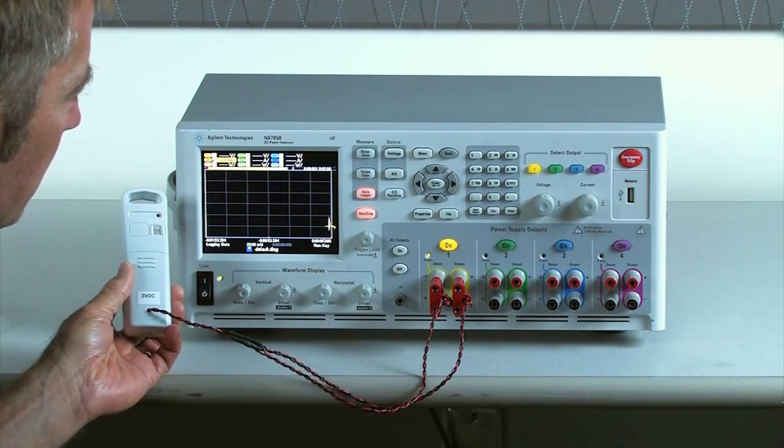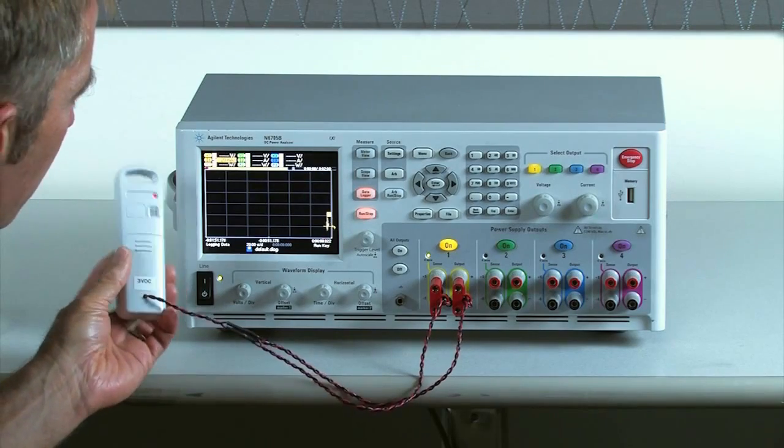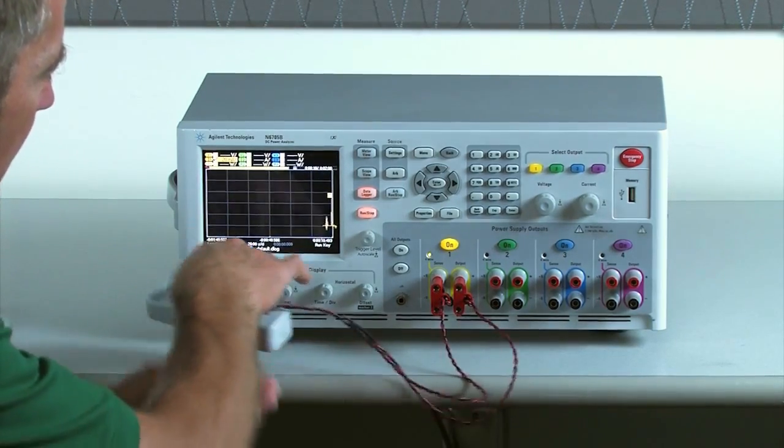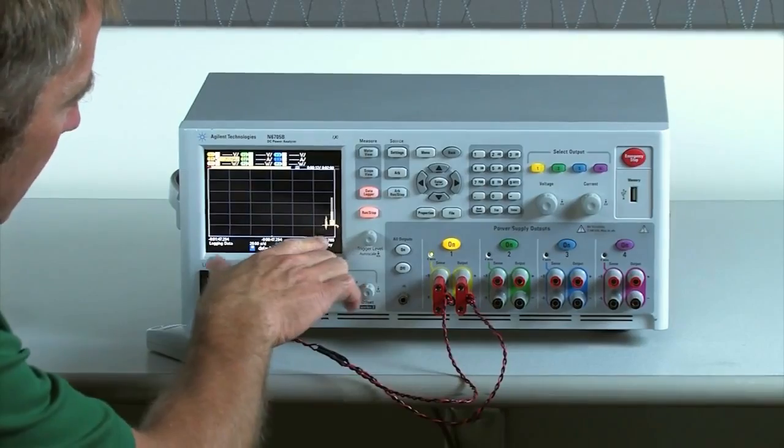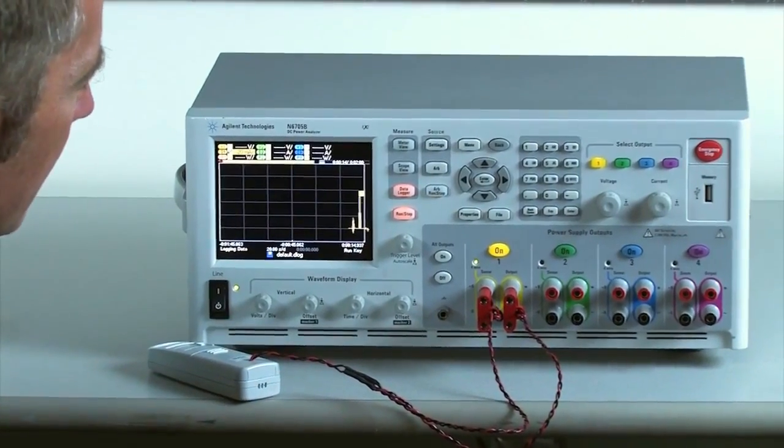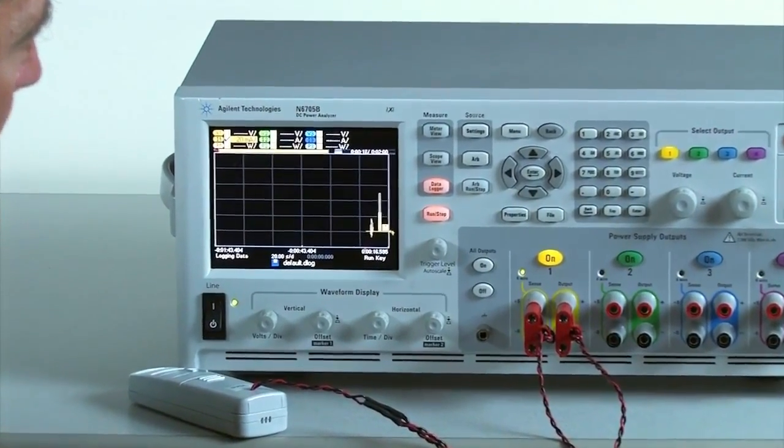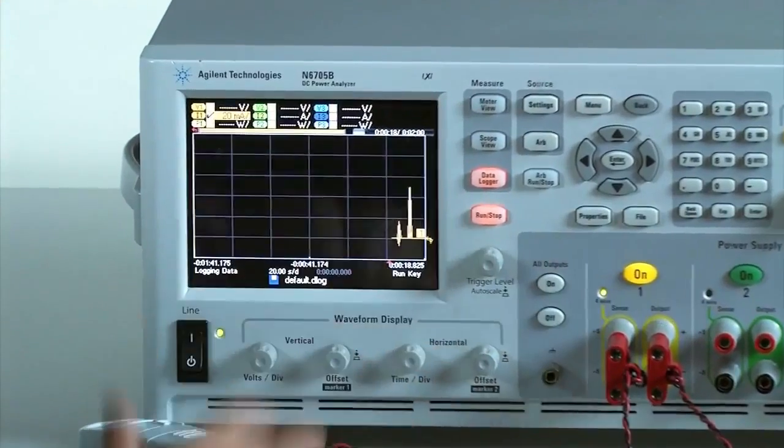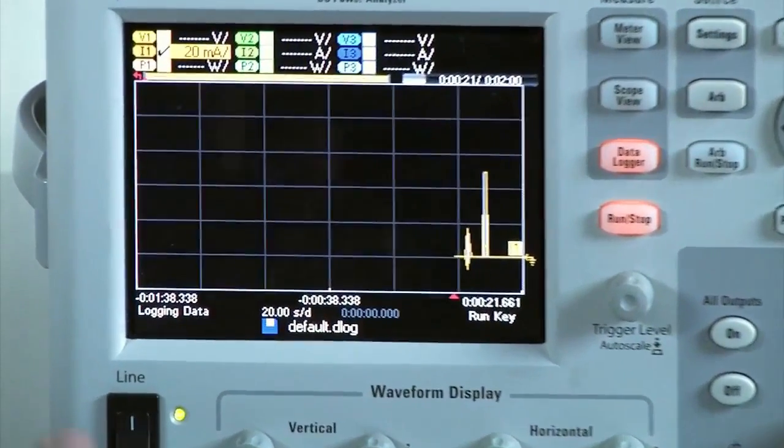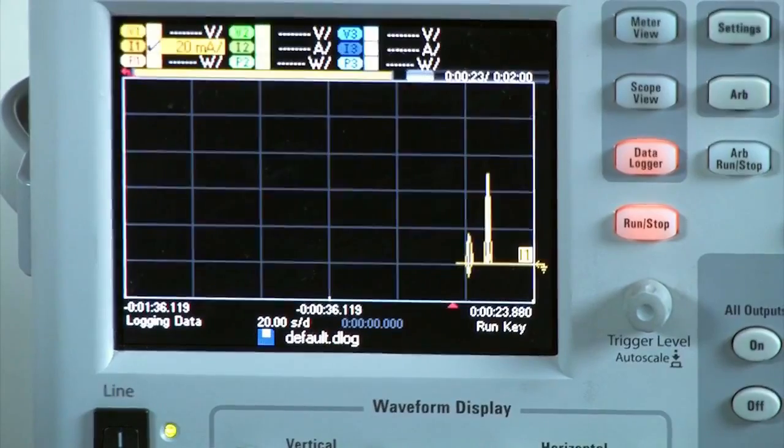So we'll see some current being drawn from the temperature sensor as it turns on, and then it returns back to an idle state, so it's pulling very little current. And then we see our first pulse of current, and that's the wireless temperature sensor sending out its data.